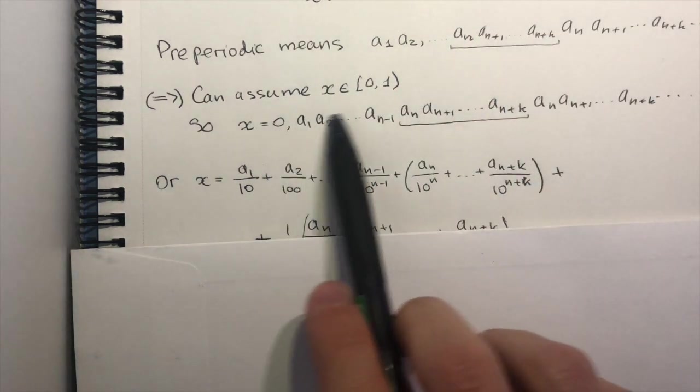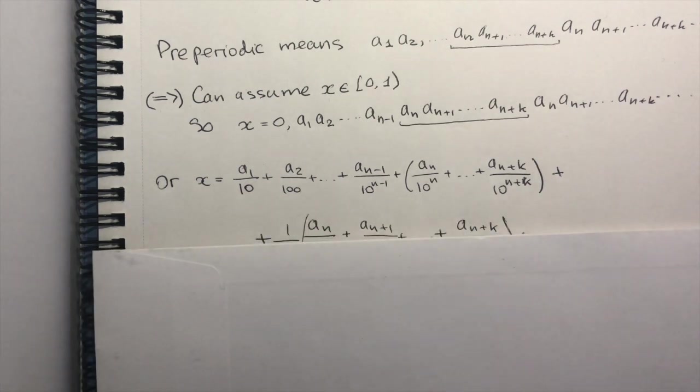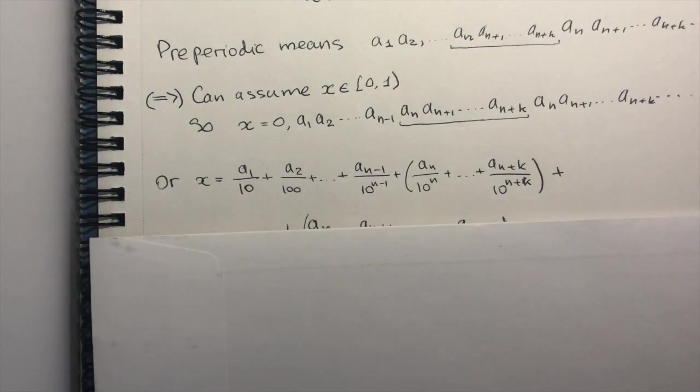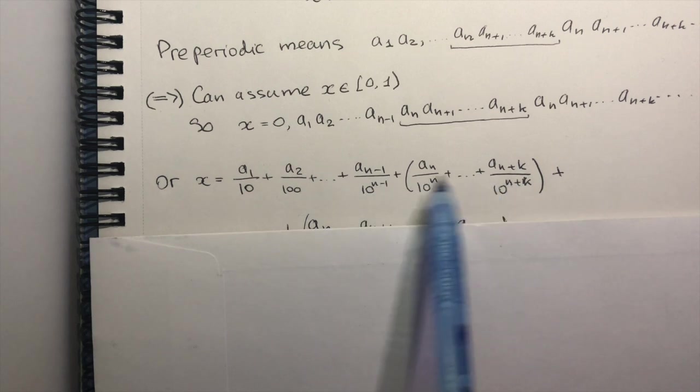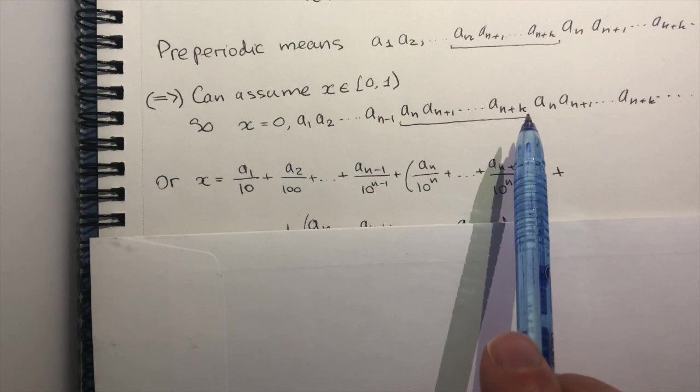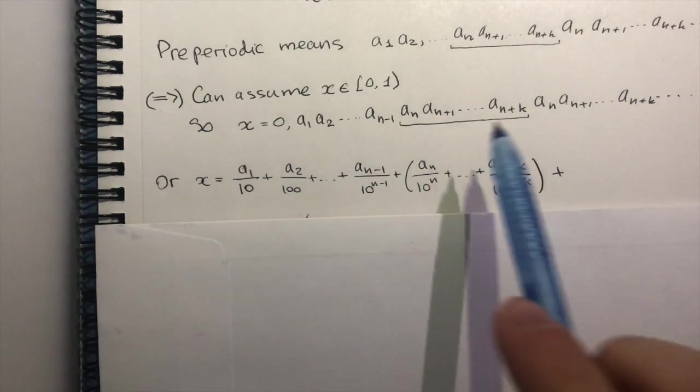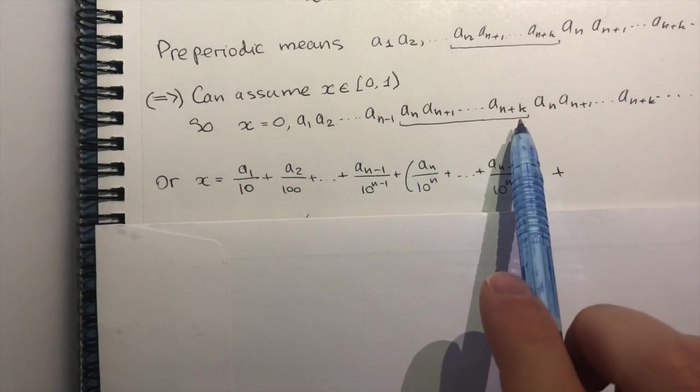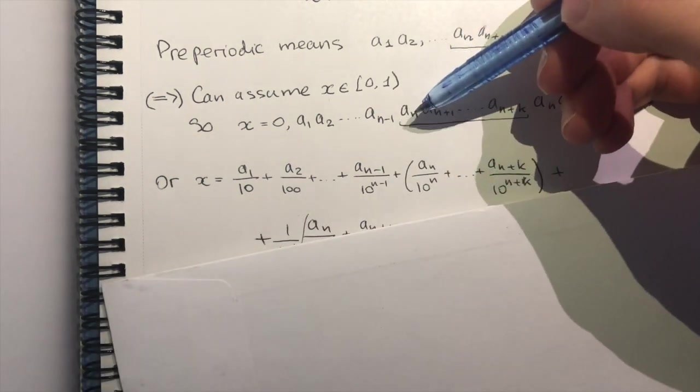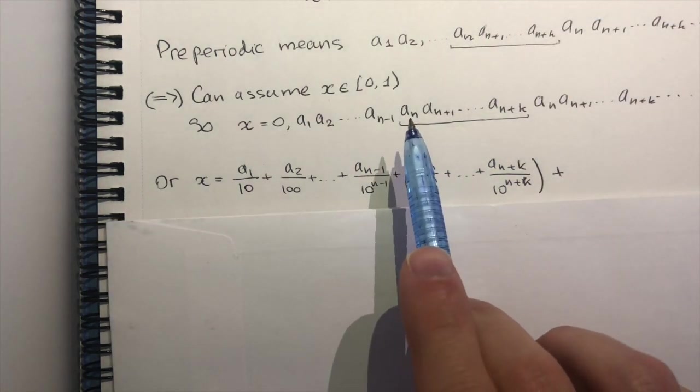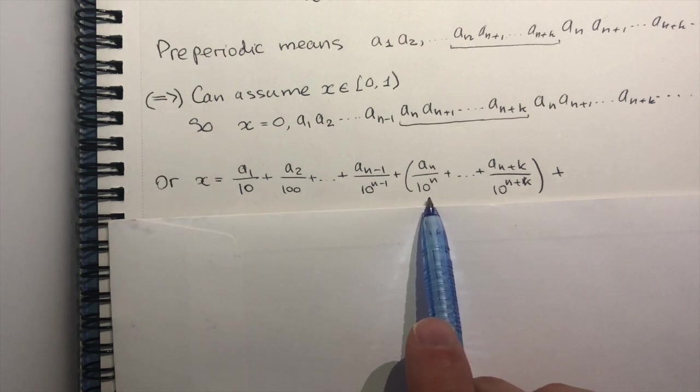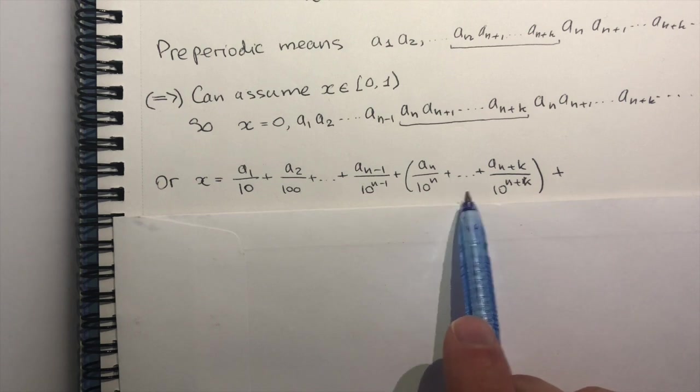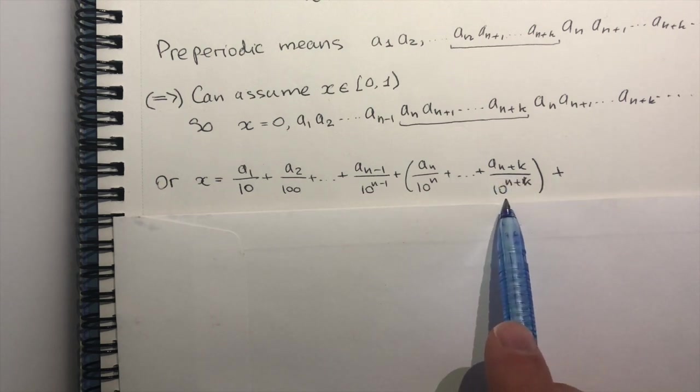So using our decided notation, we can rewrite x as this sum. So what did I do here? I took the first n minus 1 numbers out, and then I grouped those numbers that are periodic into brackets. So the first k-tuple that is going to repeat is here. This number brings aₙ over 10 to the n to x. So the next numbers will be divided by greater and greater powers of 10 until aₙ₊ₖ becomes this.